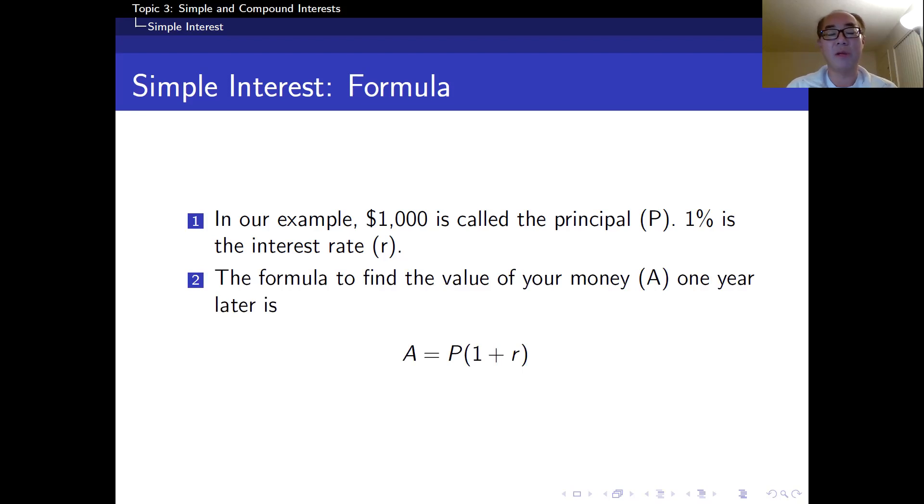So a year later, you're going to have $1,010 in your saving account. In your example, the $1,000 you left in the saving account is called the principal. And this 1% is called the interest rate, the annual interest rate. So here's a formula that I use. A denotes the amount after one year. Then A is equal to principal times parentheses 1 plus r. So remember, I had 1 plus r, which is like 1 plus 0.01. So in your example, I had 1.01.